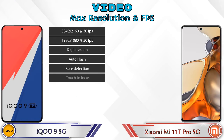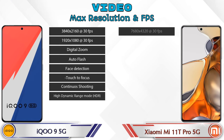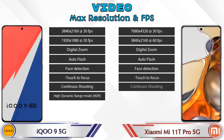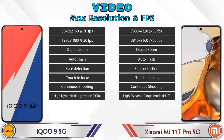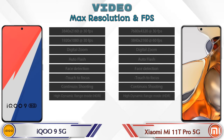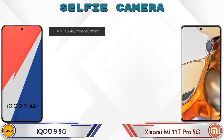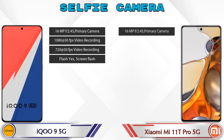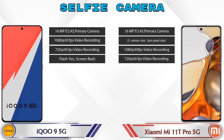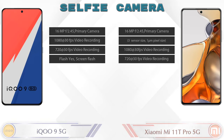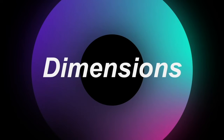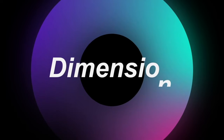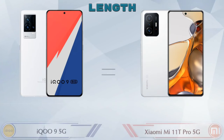For video camera, both phones have eight different types of features available. As for the front selfie camera, both phones have a single camera with four different features available.